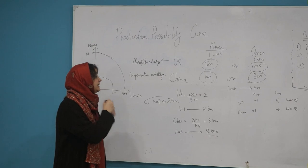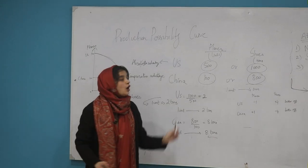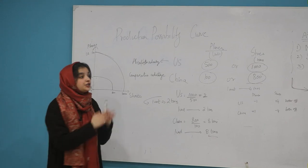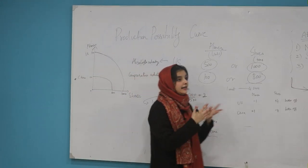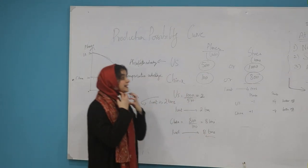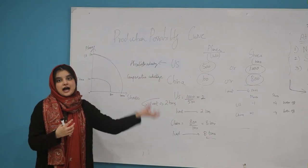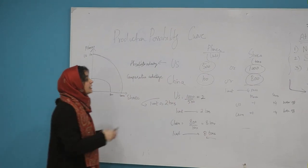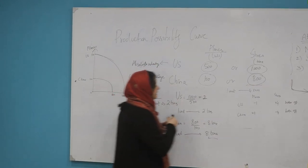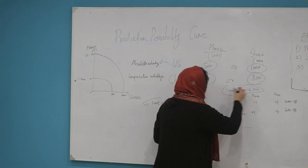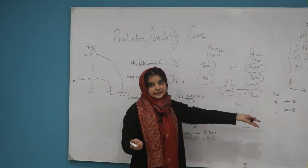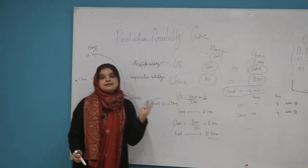The two countries will decide that the US will make planes and China will make shoes, and then they will trade. Trade means that you specialize in what you are expert at, and the rest of the things you will trade. For example, if China and the US decide that they will trade one unit of plane for four tons of shoes, then both countries can be better off.